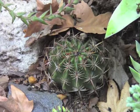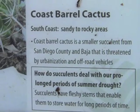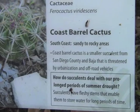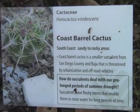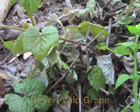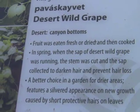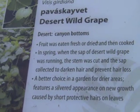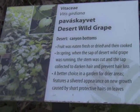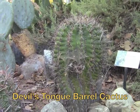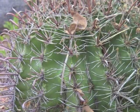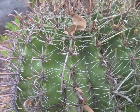Succulents have fleshy stems that enable them to store water for long periods of time. Some other adaptations that plants in the desert have are long vertical roots enabling a plant to reach water sources beneath the soil. You could also have shallow radial roots that extend horizontally, which maximize water absorption at the surface.